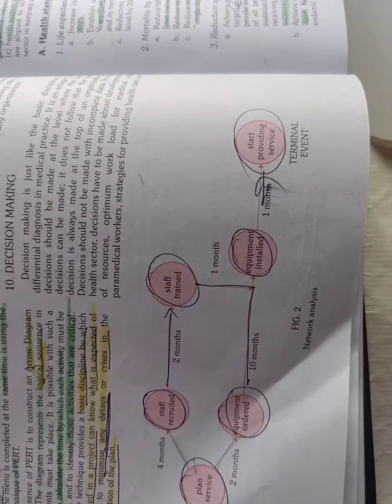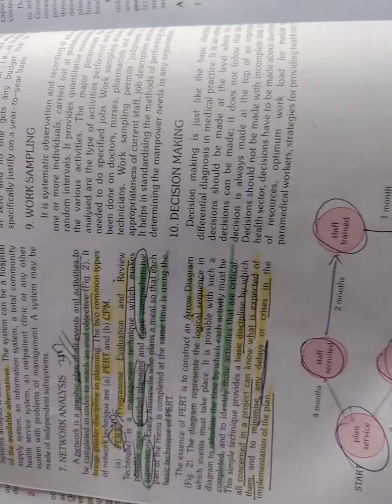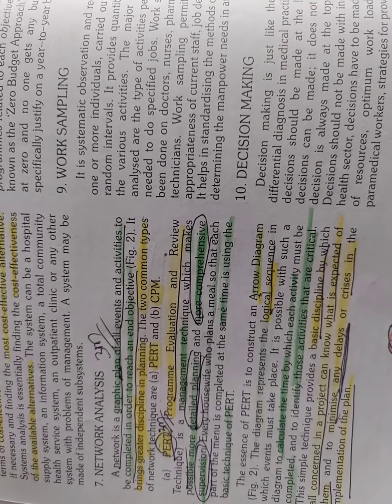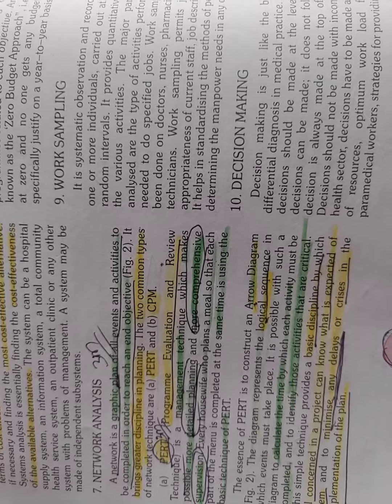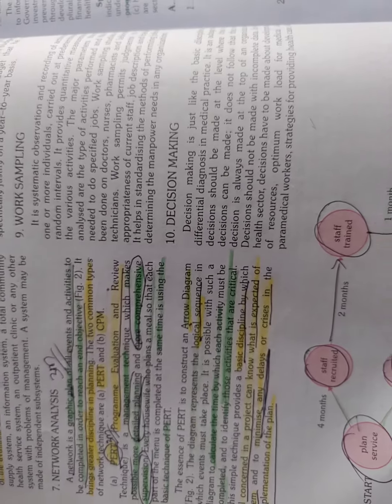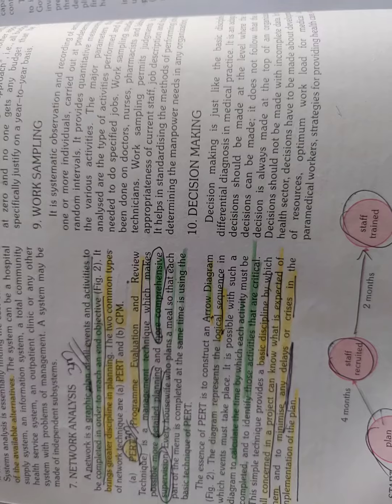Here there are two things: PERT and CPM - Critical Path Method and Program Evaluation and Review Technique. These are the two important network analysis methods.